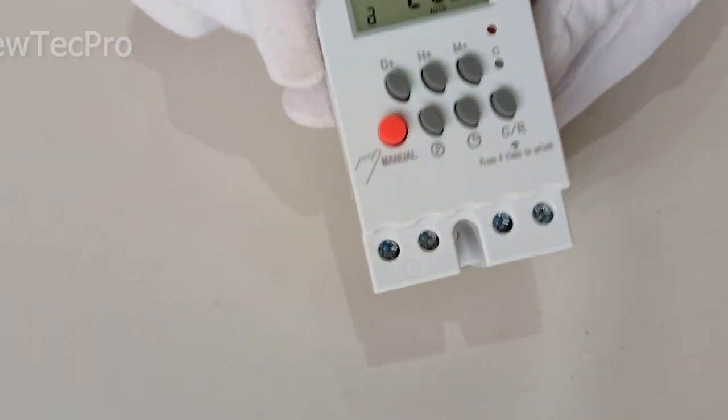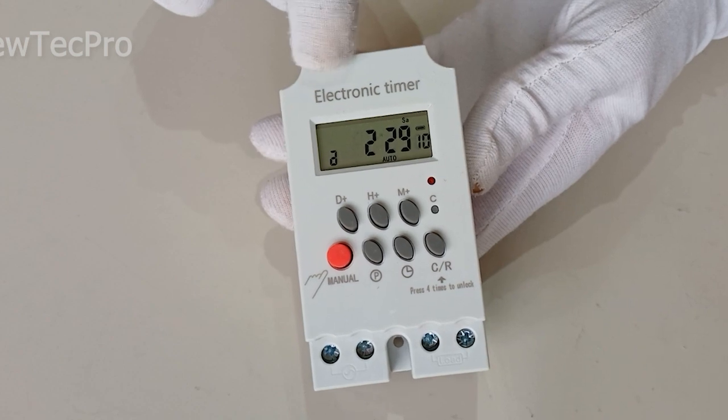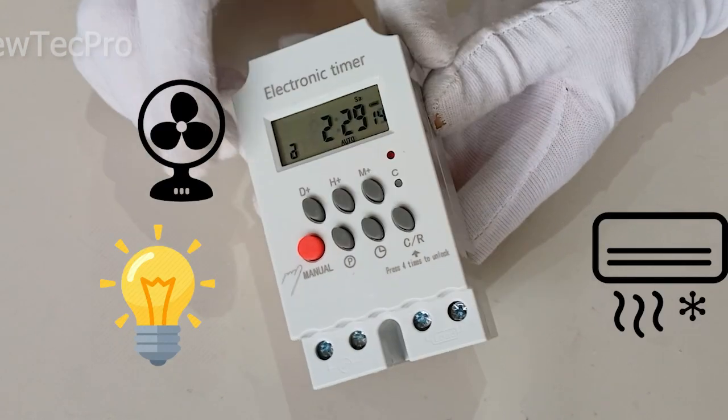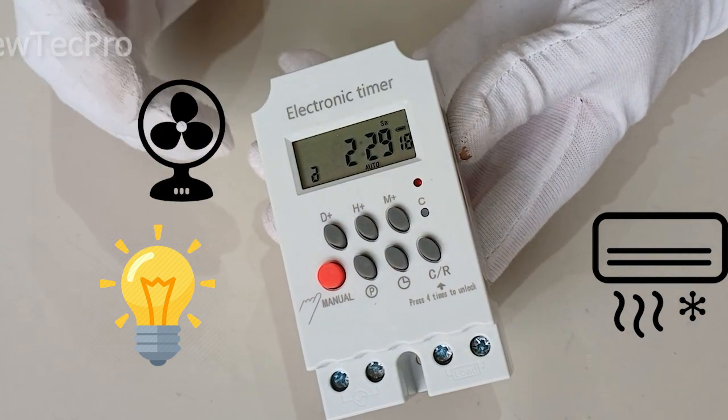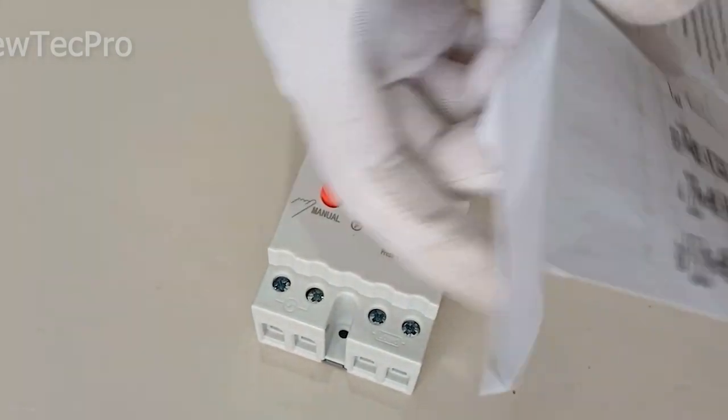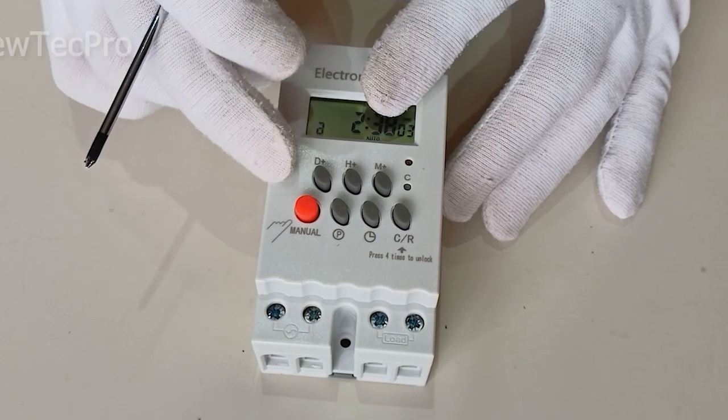By using this digital timer, you can turn various electrical devices on and off automatically at a specific time. Before starting the training, I suggest you read the guide inside the package.